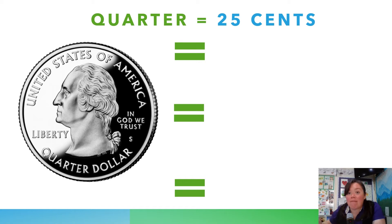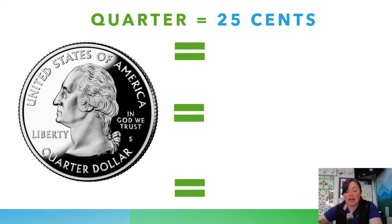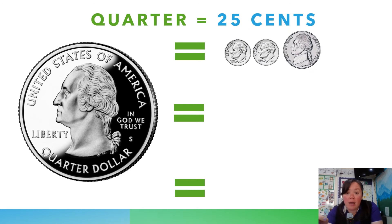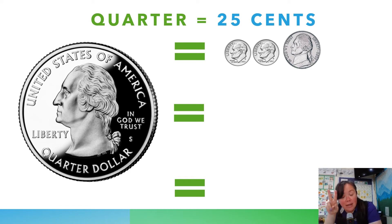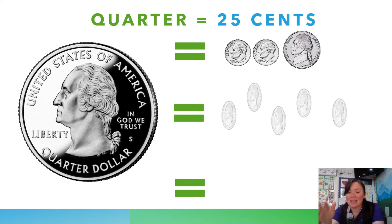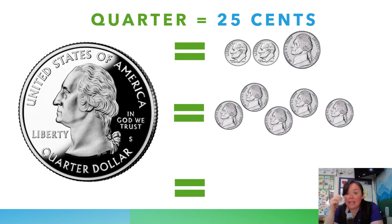Here's another — a quarter. The obvious one would be 25 pennies. You could use pennies for any equivalent and count out how many cents you need. But let's use other coins. The most common way to make 25 cents is two dimes and a nickel: 10, 20, plus 5 equals 25.